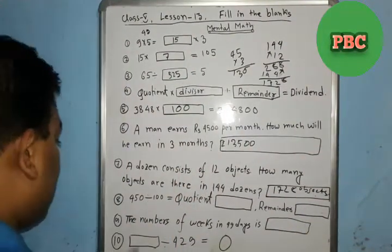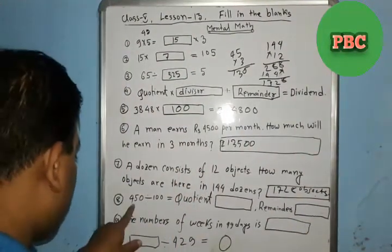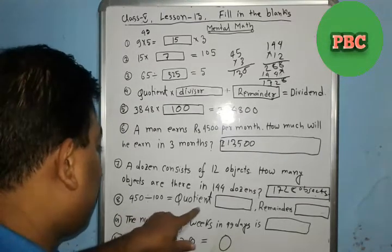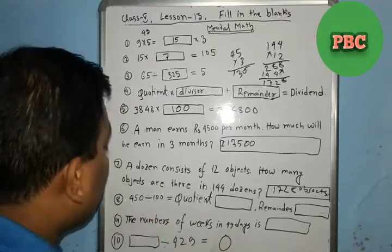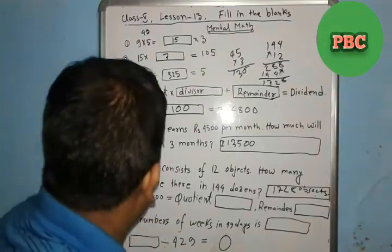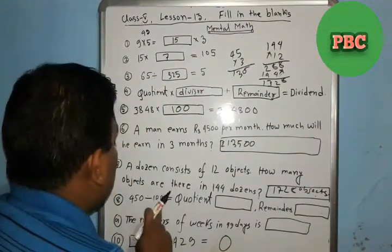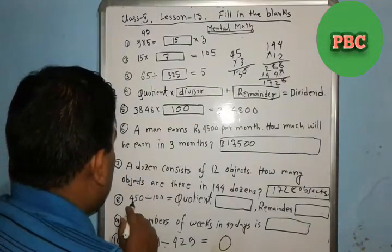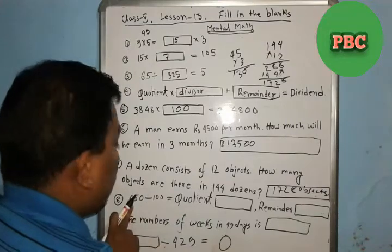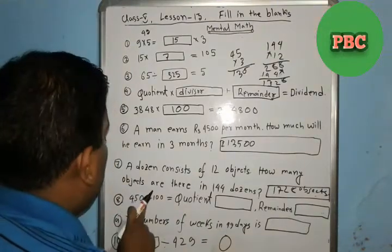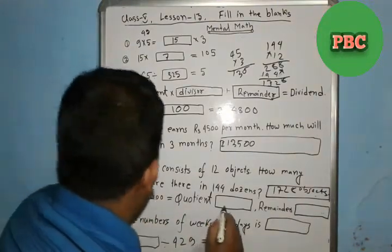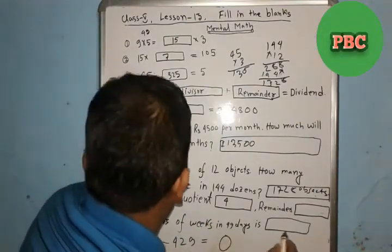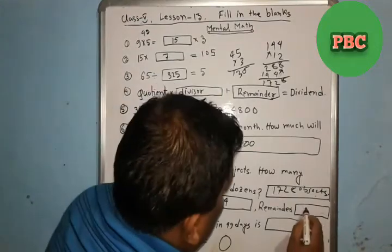There is a 45. A 100, a 100, a 100, a 100. What is the question? I don't know if you have a question. If you have a question, the question remains. The question remains is 50.